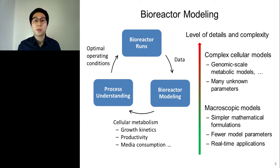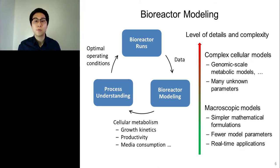Bioreactor models are developed with different levels of detail and complexity depending on their purpose. There are complex cellular models, like genomic-scale metabolic models, which describe detailed cellular metabolism using data on gene expression. However, these models have too many parameters, and most are highly uncertain even with additional assumptions like steady-state metabolic fluxes. In contrast, macroscopic models give a reasonable description of the bioreactor with simpler mathematical formulations and low computational costs. These types of models can also facilitate real-time applications such as adaptive parameter estimation and model predictive control.